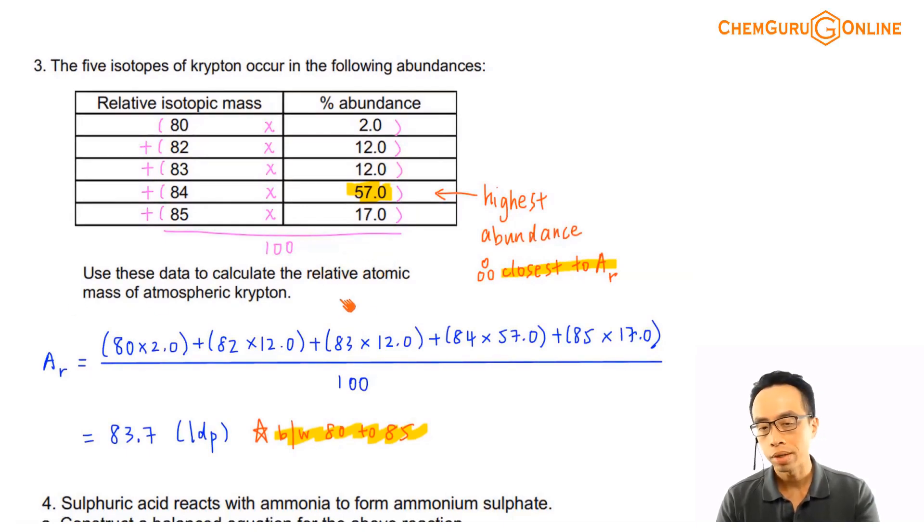Involving determining relative atomic masses. So if you're given the five isotopes of Krypton, which is here, usually it will tabulate the answer for us.